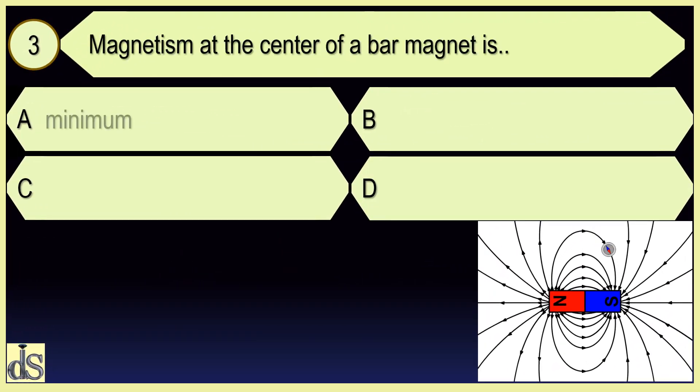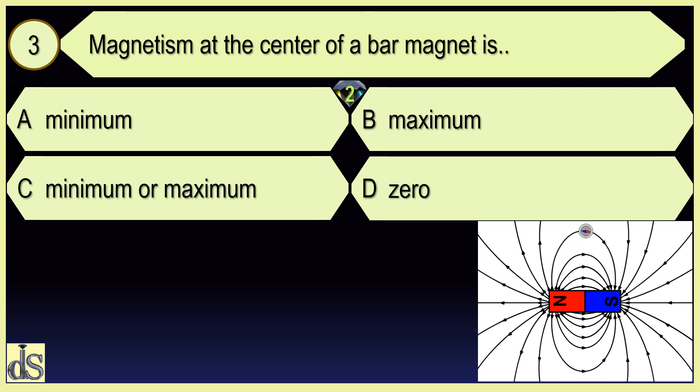Magnetism at the center of a bar magnet is zero.